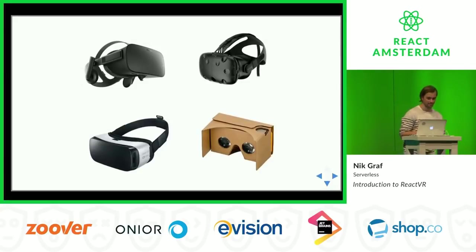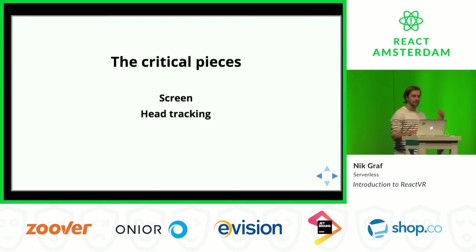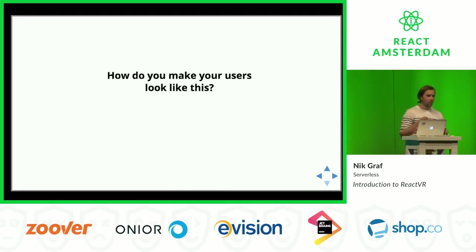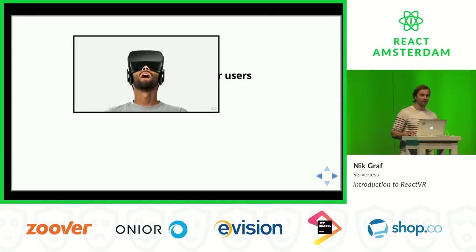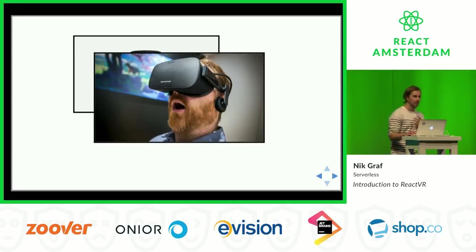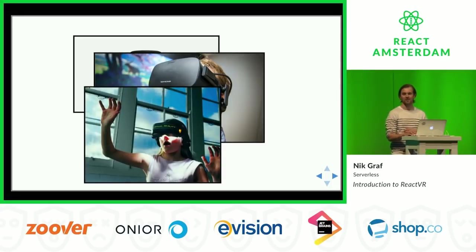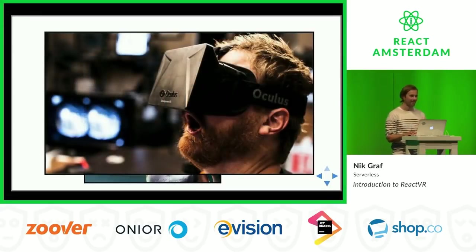First, to actually do VR we need a device. There are a couple of providers out there: Oculus, HTC Vive, Samsung Gear, Google Cardboard — all of them count as VR. The critical pieces are screen, head tracking, a head mount, and lenses. And what's happening is that just these few pieces create a completely different, immersive experience. Most people when they are in VR, their jaw drops — it's a very very intense and exciting experience.